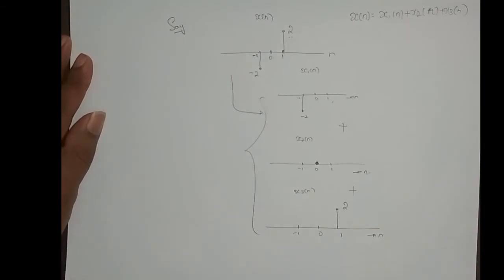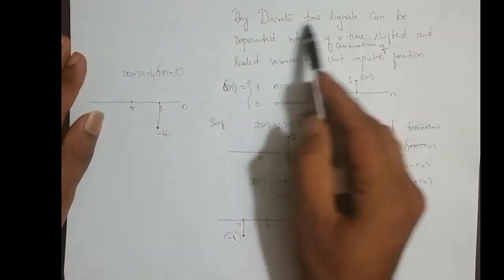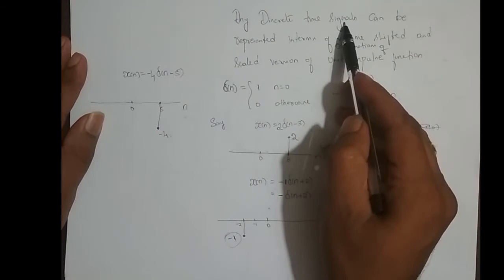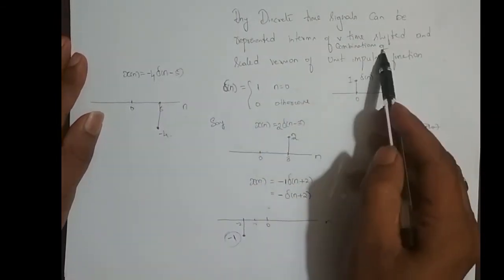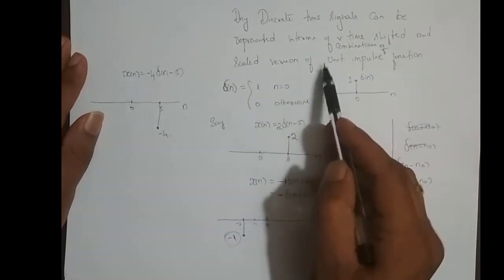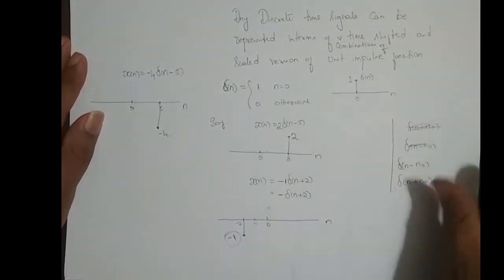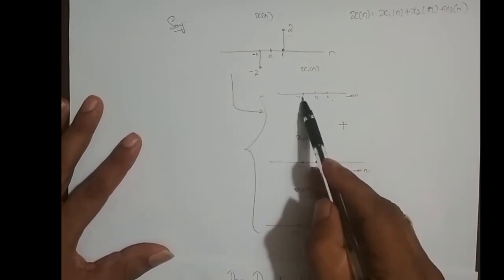But what is the statement I said before? Any discrete time signal, any arbitrary discrete time signal, can be represented in terms of a combination of time-shifted and scaled versions of the unit impulse function. So I shifted in time and scaled the amplitude.